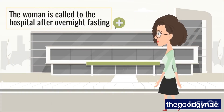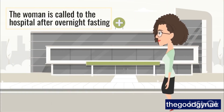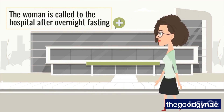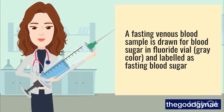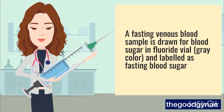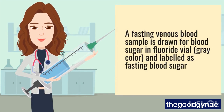The woman is called to the hospital after overnight fasting. A fasting venous blood sample is drawn for blood sugar in a fluoride vial, gray color, and labeled as fasting blood sugar.